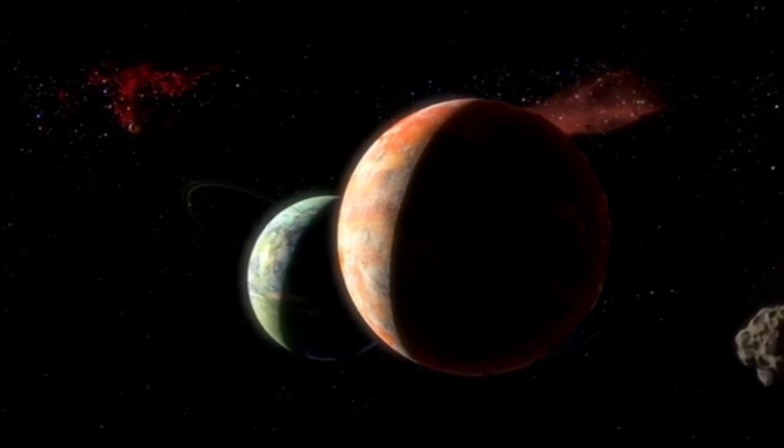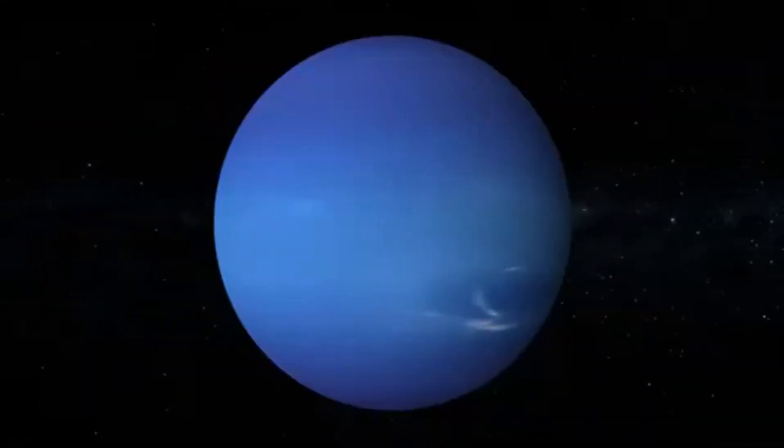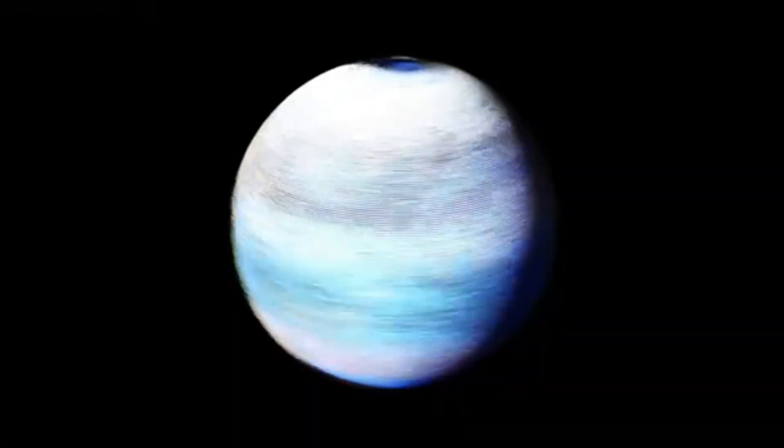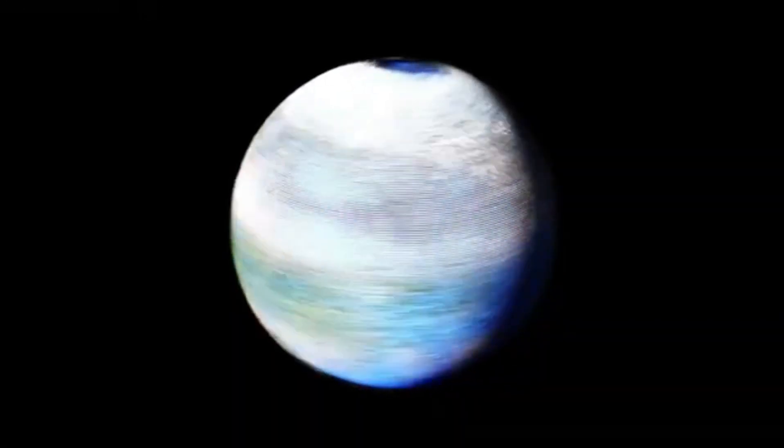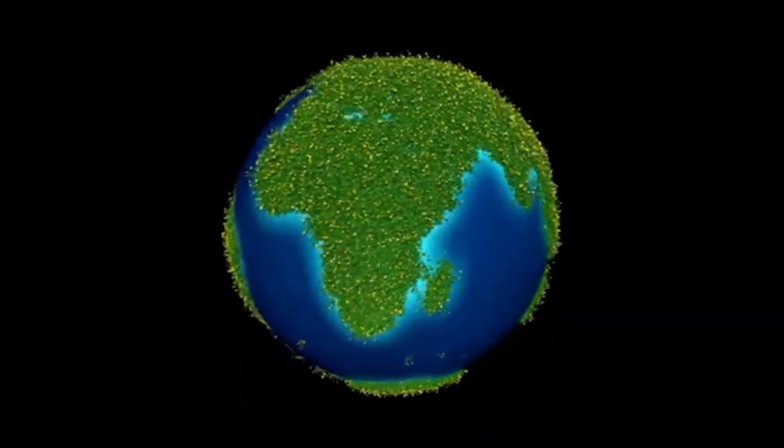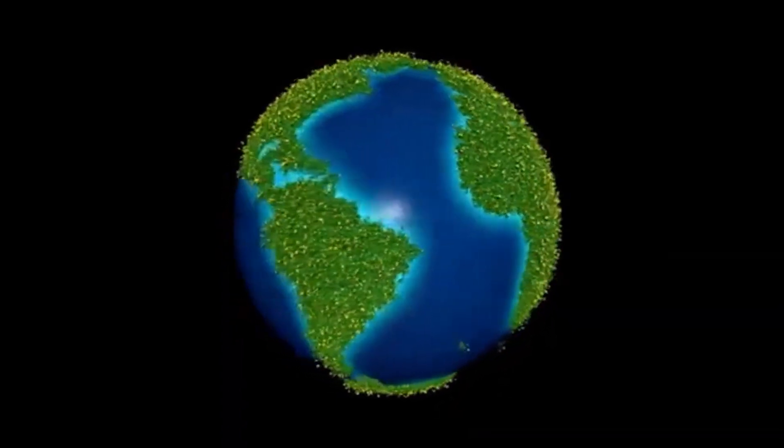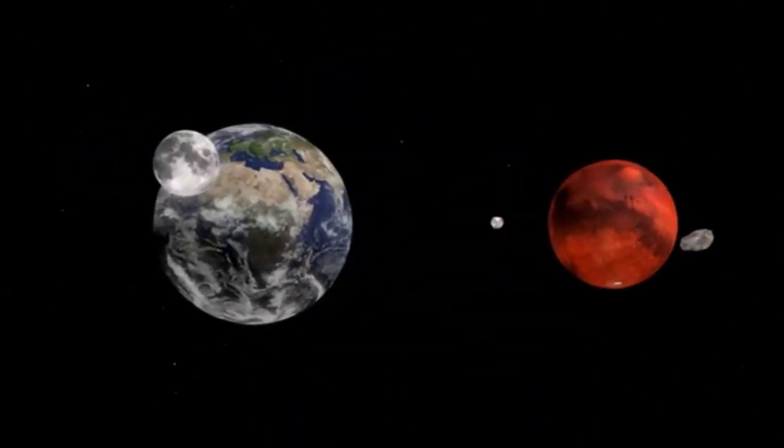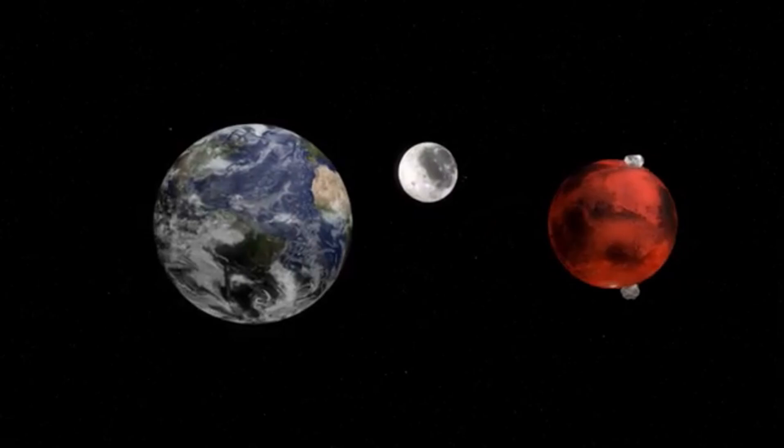These planets, he theorized, could have up to ten times the mass of Earth and twice the radius, but instead of being boiling infernos, they could be warm, watery worlds. These sub-Neptunes could be surrounded by a thick, hydrogen-rich atmosphere and, crucially, a massive layer of water, possibly making up as much as 90% of the planet's total mass. This vast ocean could harbor the basic ingredients for microbial life.